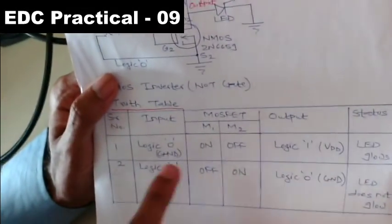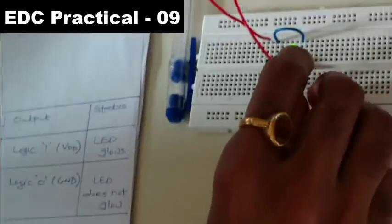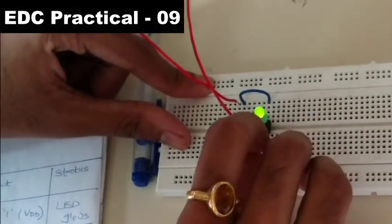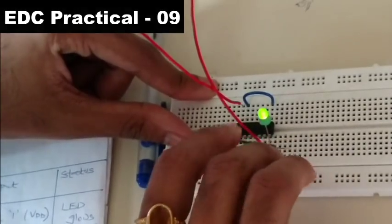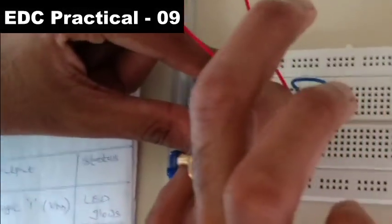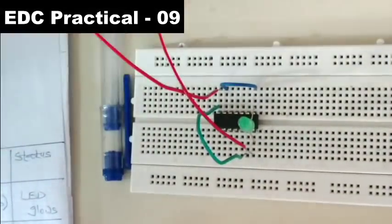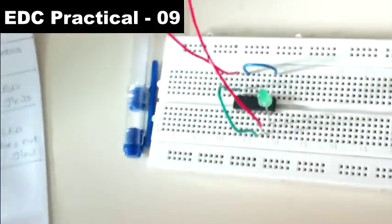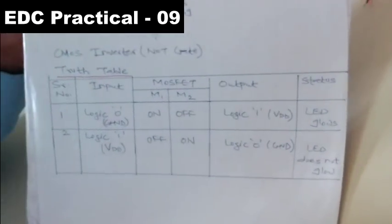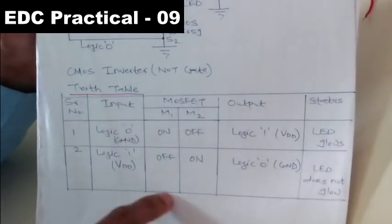For the second verification: connect pin number 6 to pin number 14 (VDD = logic 1). When I connect this to logic 1, the LED does not glow — the output is logic 0. So this verifies the complete CMOS inverter truth table.